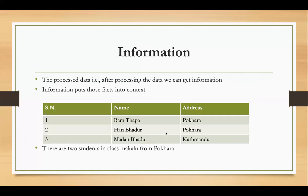So data alone is just raw facts. When information is available, we can process the data. After processing the data, we can get information. The information puts those facts into context — the facts can produce content.